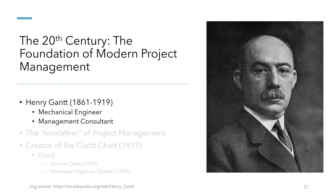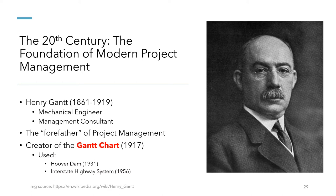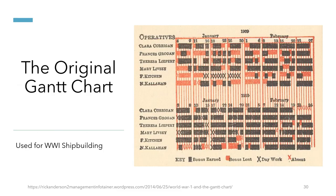One of these inspired colleagues was Henry Gantt, who also happened to be a mechanical engineer and a management consultant. By expanding upon Frederick's findings and creating his own system of project management, Henry Gantt became one of the most influential project managers in history, thus being named the forefather of project management. His most famous creation was the Gantt chart, which used rows and columns to track progress, and continued to be used in many large-scale projects such as the development of the Hoover Dam and the U.S. Interstate Highway System.